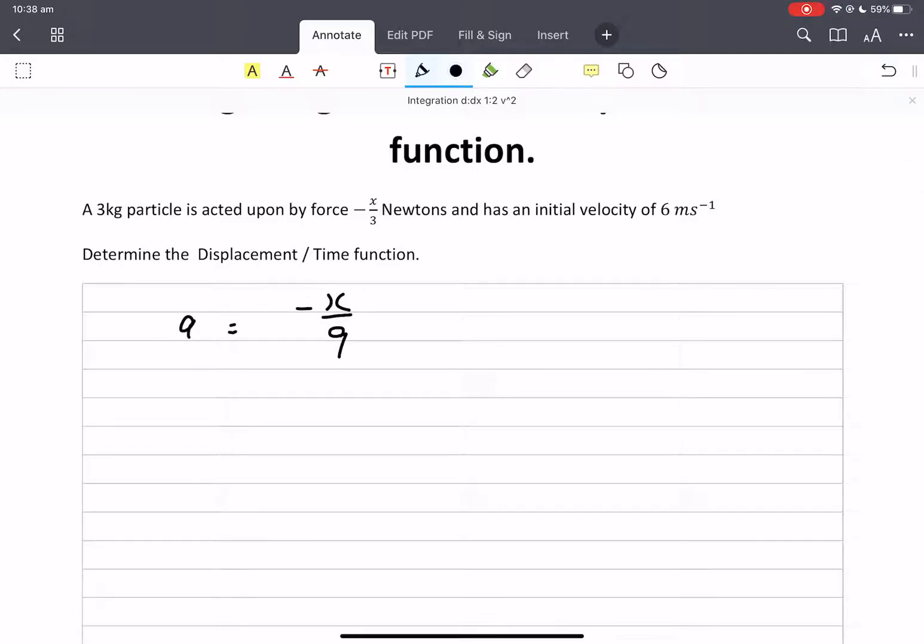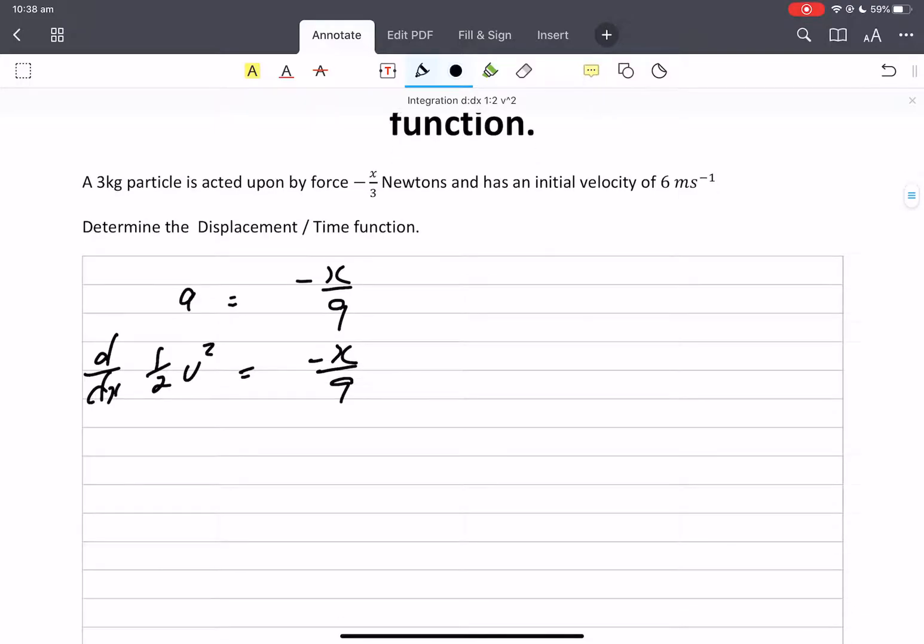So we're going to go to our formula sheet where acceleration is d dx times v. We're going to get the x and the dx together. Integrate both sides.